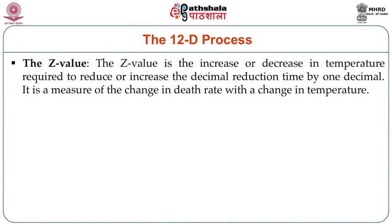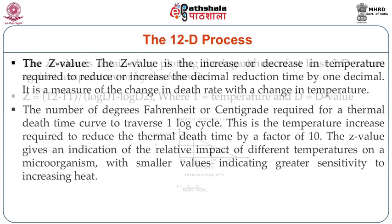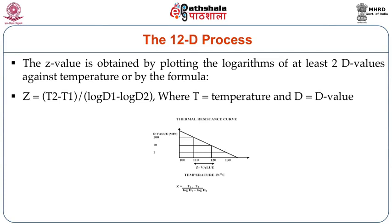The Z value is the increase or decrease in temperature required to reduce or increase the decimal reduction time by 1 decimal. It is a measure of the change in the death rate with a change in temperature. The number of degrees Fahrenheit or centigrade required for the thermal death time curve to traverse 1 log cycle is the temperature increase required to reduce the thermal death time by a factor of 10. The Z value gives an indication of the relative impact of temperature on different organisms, with smaller values indicating greater sensitivity to increasing heat. The Z value can be obtained by plotting the logarithms of at least 2 D values against temperature using the formula shown in the slide.